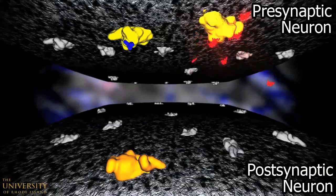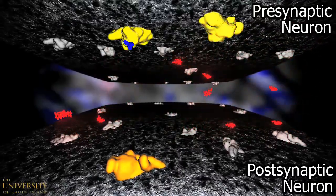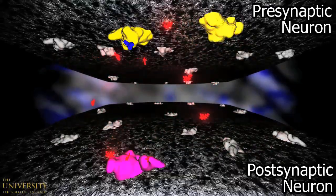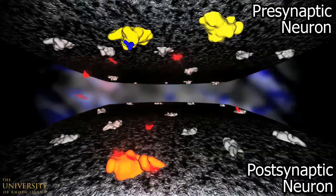When serotonin is denied entry to the reuptake protein, it must either float in synaptic space or interact more with the postsynaptic serotonin receptor. The more time serotonin molecules spend in these states, the more significant Prozac's antidepressant effects.